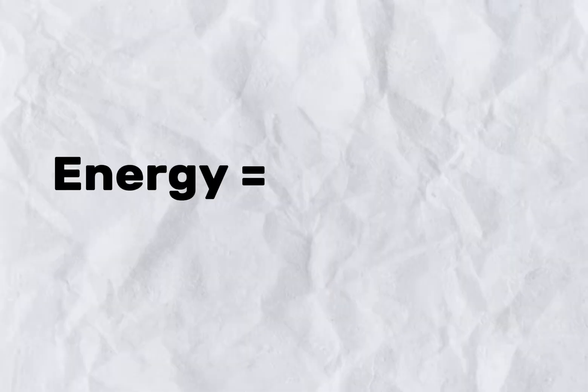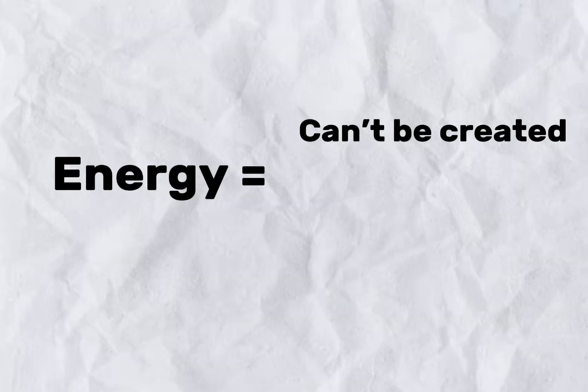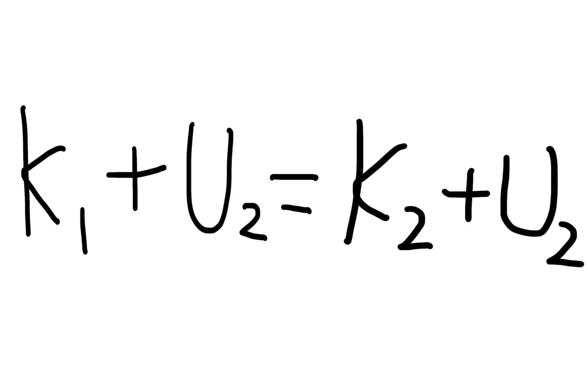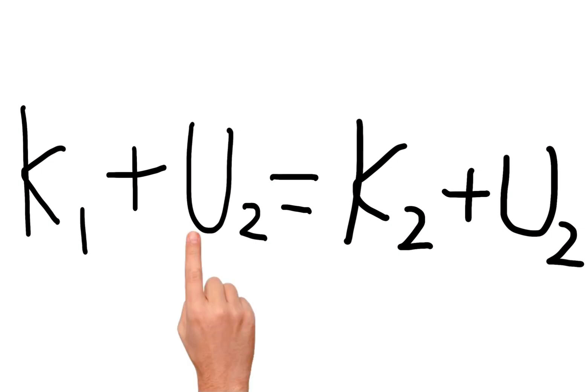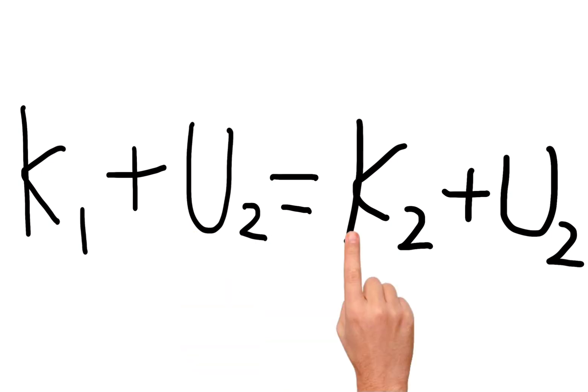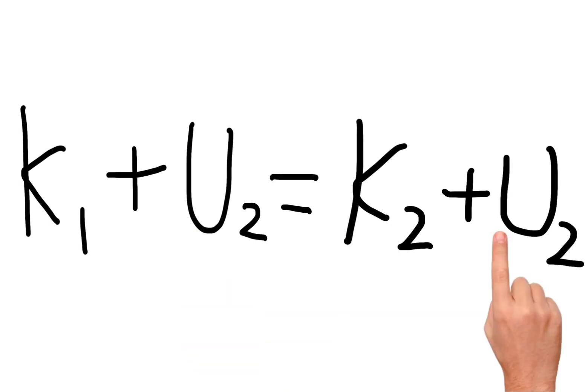Another property of energy is that it cannot be created or destroyed. The formula for the conservation of energy states that the initial kinetic and potential energy is equal to the final kinetic and potential energy.